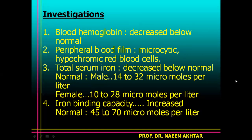Investigations: blood hemoglobin level will be decreased below normal; peripheral blood film will show microcytic hypochromic red blood cells. Total serum iron is decreased below normal — normal in males is 14 to 32 micromoles per liter, and in females 10 to 28 micromoles per liter. Iron binding capacity will be increased; normal iron binding capacity is 45 to 70 micromoles per liter.